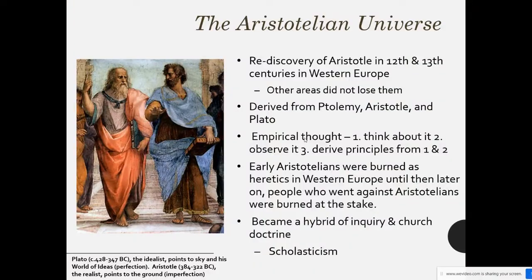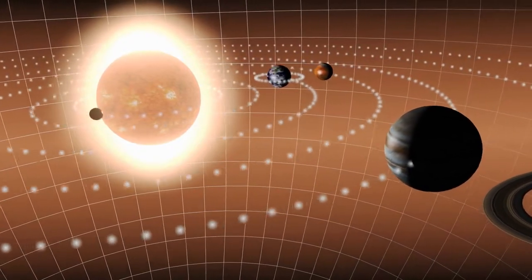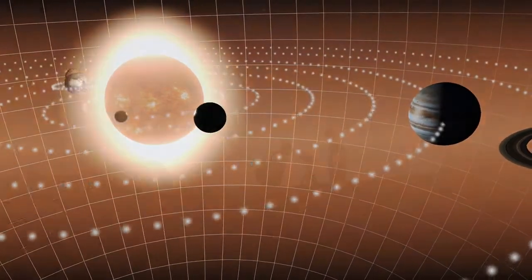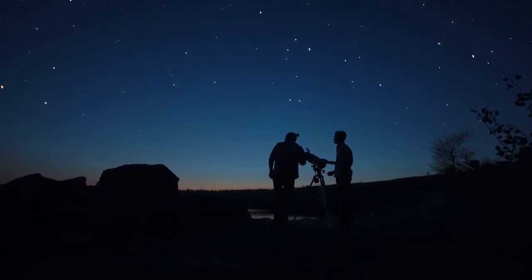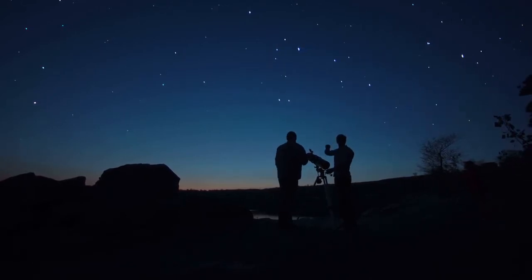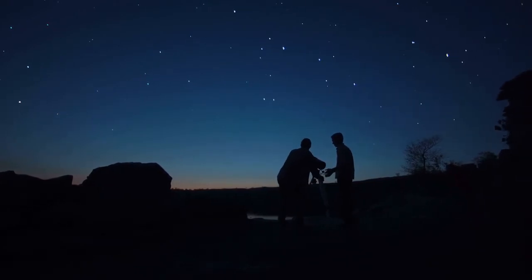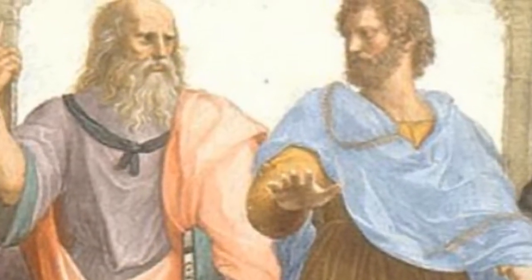With empirical thought, we're looking at the steps taken to make predictions or theories. First, you're going to think about the problem logically — for example, is the Earth the center of the universe or the sun? Then you're going to observe it, make your observations, write things down, maybe draw some charts. And then number three, you're going to derive principles from steps one and two. Keep in mind this is a time period where they don't have a telescope, so this is their limited ability.